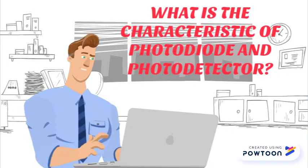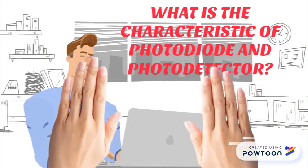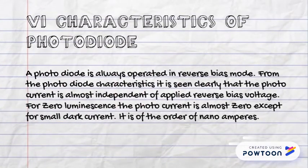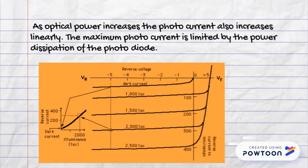What are the characteristics of a photodiode and photodetector? Characteristics of photodiode: a photodiode is always operated in reverse bias mode. The photocurrent is almost independent of applied reverse bias voltage. For zero luminescence, the photocurrent is almost zero except for a small dark current, which is of the order of nanoamperes. As optical power increases, the photocurrent also increases linearly. The maximum photocurrent is limited by the power dissipation of the photodiode.